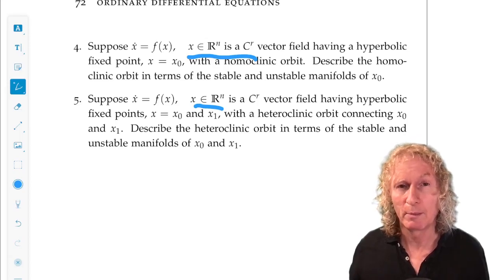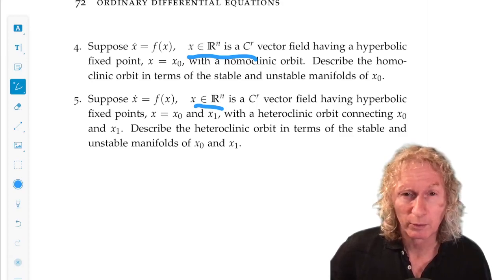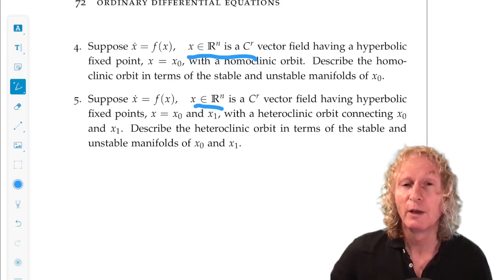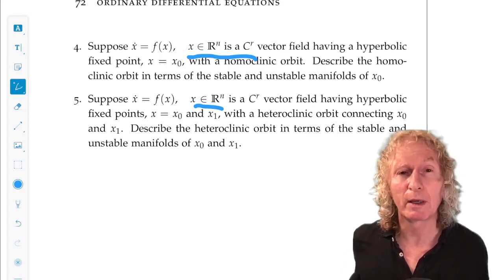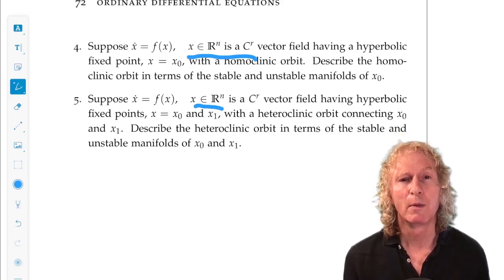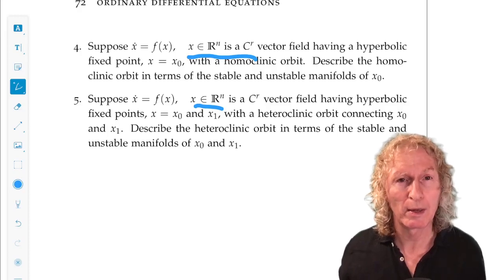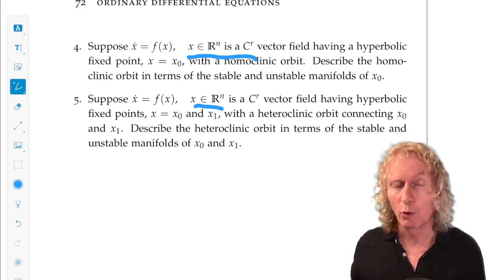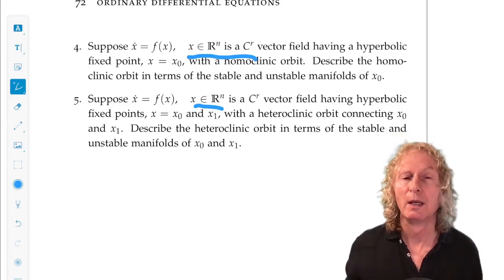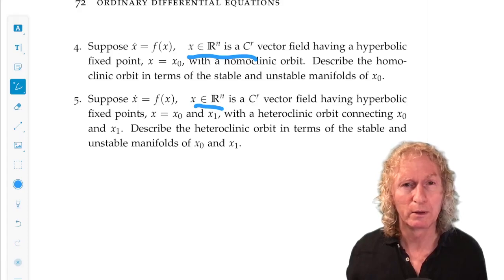Also, in backwards time, it approaches the equilibrium point. That's the definition of homoclinic I gave earlier. You need to go back and look at that. So, it must be in the unstable manifold. Ah! Homoclinic orbit must be simultaneously in the stable and the unstable manifold of the equilibrium. So, an orbit that is homoclinic to hyperbolic equilibrium point, must be in both the stable and unstable manifold of that equilibrium.